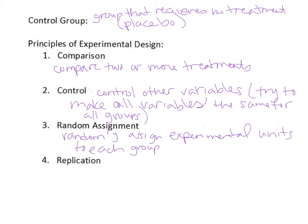The fourth principle is replication, which means having many experimental units. In the tomato example, they had 24 plants — too few would have been a poor experiment. The head lice example was even better for replication because they had over 300 experimental units, which were the households.